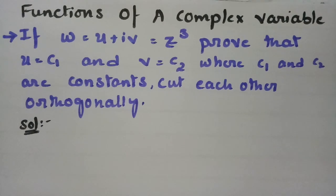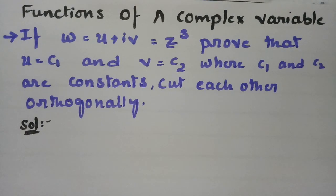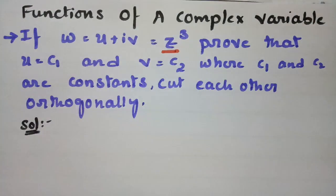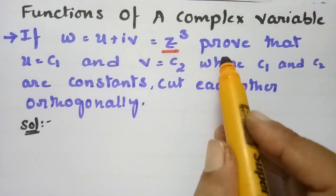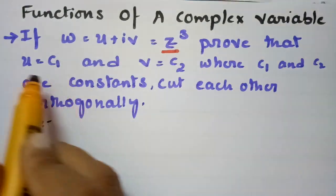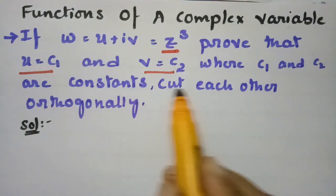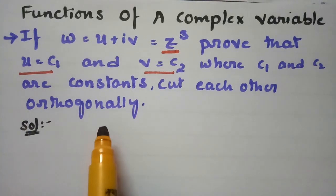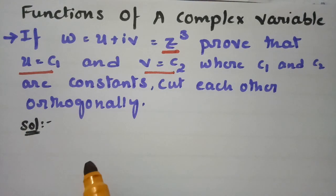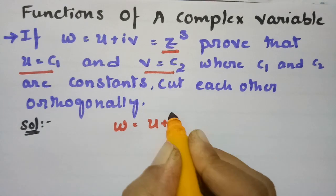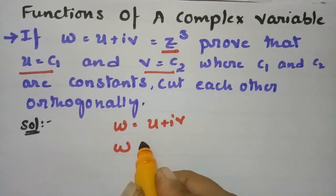In today's video I am going to explain the most important problem from functions of a complex variable. If w is given as z cube, we have to prove that u = c1 and v = c2, where c1 and c2 are constants, cut each other orthogonally. We frame w as equal to u plus iv.